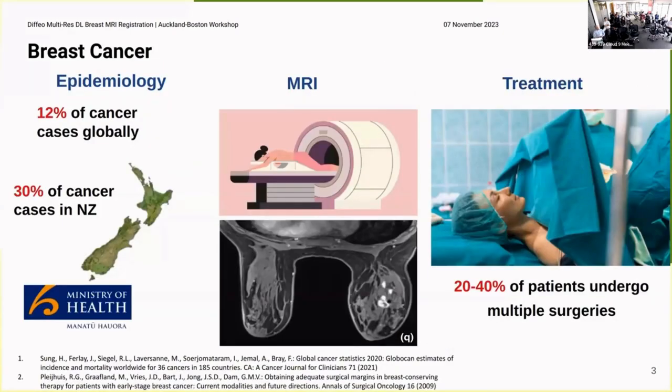So just to begin with, talk a bit about breast cancer. There's a 12% incidence rate of breast cancer globally and 30% in New Zealand, so that's quite a large incidence rate. MRI is the gold standard image modality for breast cancer imaging. When you do an MRI, you can inject a contrast breast agent into the patient which collects in the tumor region and appears very bright.